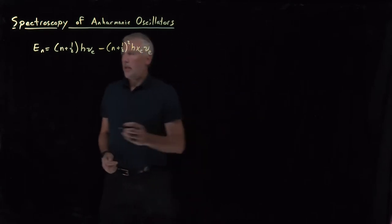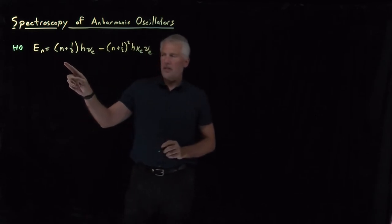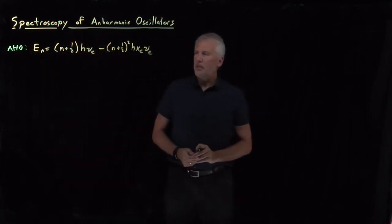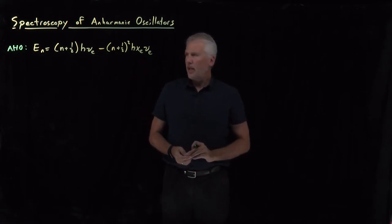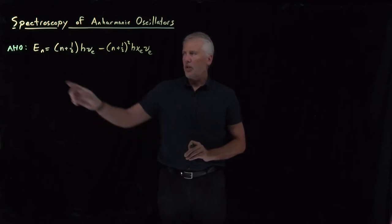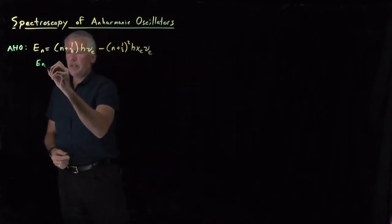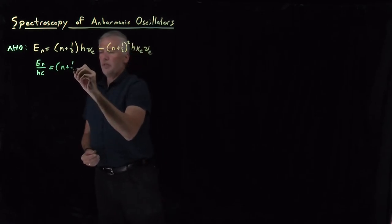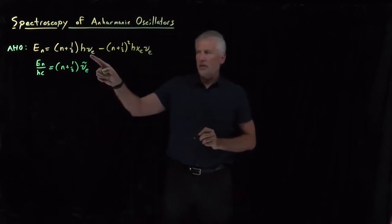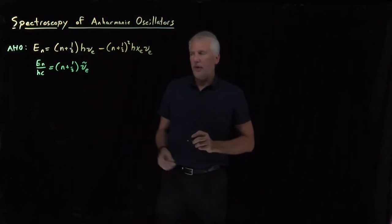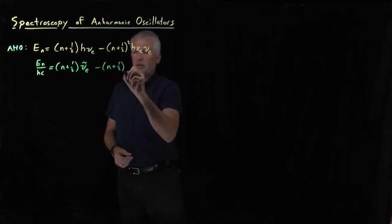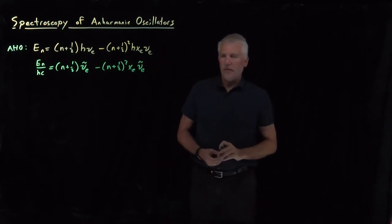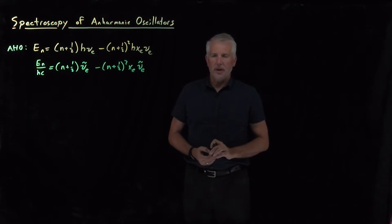For an anharmonic oscillator — not just a harmonic oscillator which has energy levels of n plus a half h-nu, but one that exhibits some anharmonicity — we have this correction to the energy levels. Since in spectroscopy it's more convenient to talk about energy levels in units of wavenumbers, if I take the energies and divide by hc, that equation looks very similar. We've just changed h-nu into units of wavenumbers, and likewise for the anharmonicity correction, dividing by hc.